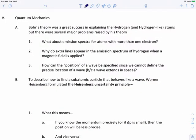Bohr's theory was great in explaining the hydrogen and hydrogen-like ions where there's one electron. But there are several major problems raised by this theory. What about the emission spectrum for atoms that have more than one electron? Why do extra lines appear in the emission spectrum of hydrogen when an electric field is applied? And how can the position of a wave be specified, since we cannot define the precise location of a wave, because a wave extends in space?